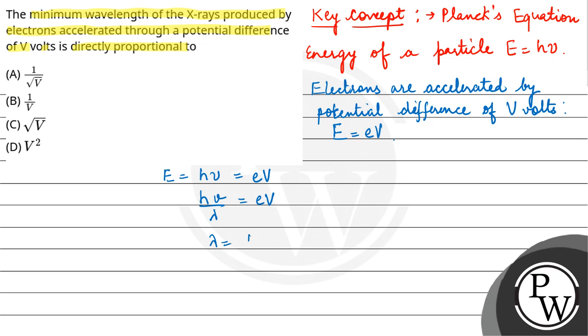So lambda equals HV upon eV. That means lambda is directly proportional to 1 by V.